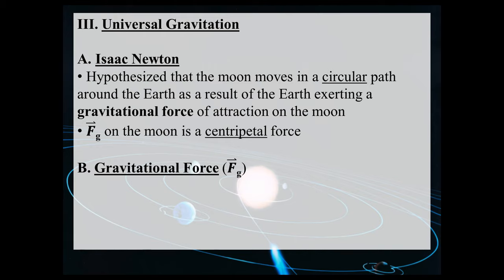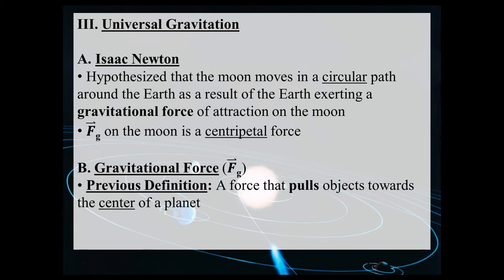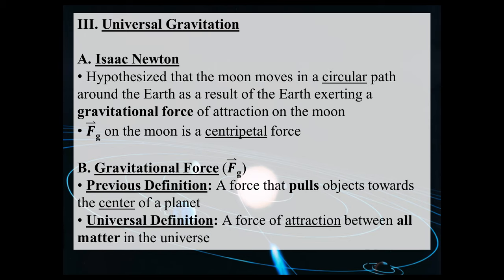We're going to have to modify our definition of the gravitational force a little bit, because so far in Physics 20 we've only dealt with the gravitational force with objects on or near the surface of the earth. Now we have to bring it to a much larger scale. Our previous definition of the force of gravity was simply a force that pulls an object straight down towards the center of a planet — on every free body diagram we drew, FG pointed straight down. Universally, we can define the force of gravity as a force of attraction between all matter in the universe.